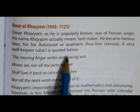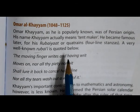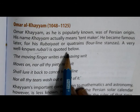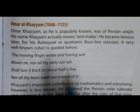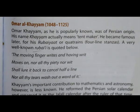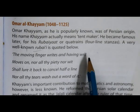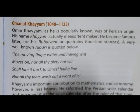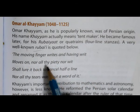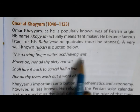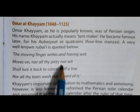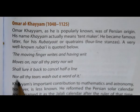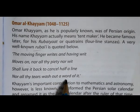A very well-known rubai is quoted below. The rubaiyat, also called rubai, is a type of poetry consisting of four lines. A famous rubai translated from Persian reads: 'The moving finger writes, and having writ, moves on; nor all thy piety nor wit shall lure it back to cancel half a line, nor all thy tears wash out a word of it.'